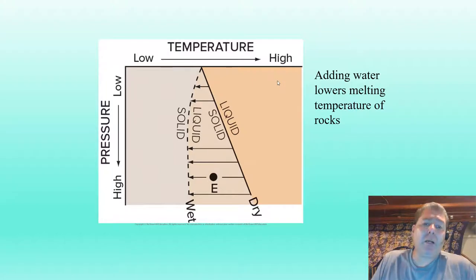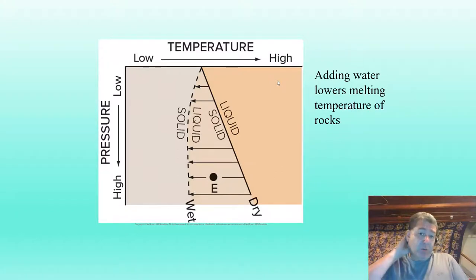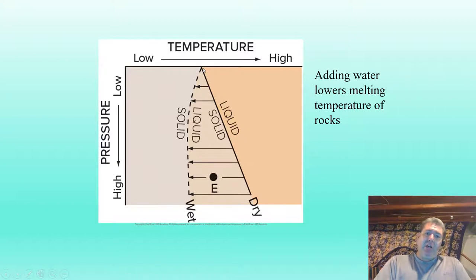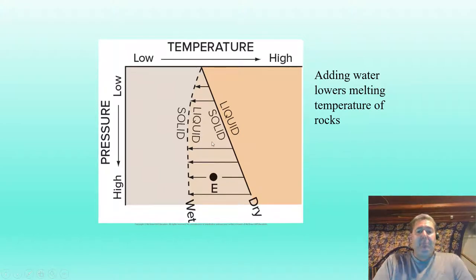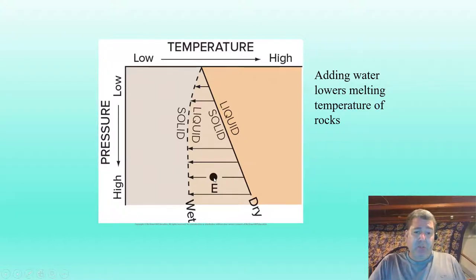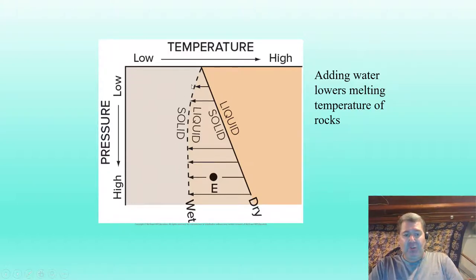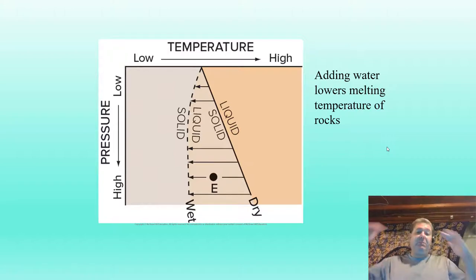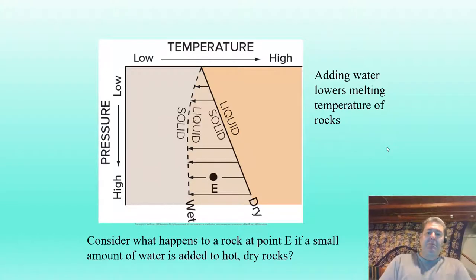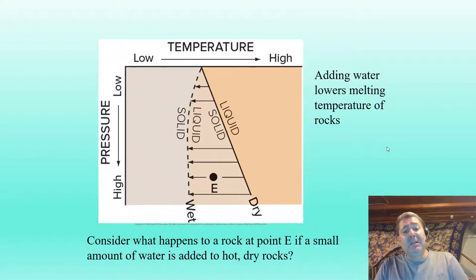We take that partially molten asthenosphere and melt it by decompressing it. There's another interesting thing we can do: add water. Adding liquid to the system changes the whole story. A rock at point E — when dry — is a happy solid on the dry solid-liquid line going down deep. However, if we add water without changing the temperature or pressure, it shifts the line over to the wet curve. Simply adding water causes that asthenosphere to melt. This is what we see at convergent margins: as the plate subducts, water is driven off and added to the asthenosphere, causing it to melt and rise buoyantly.